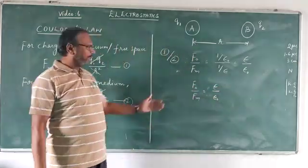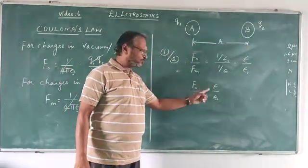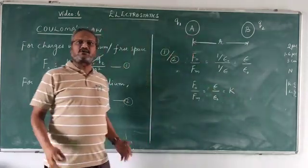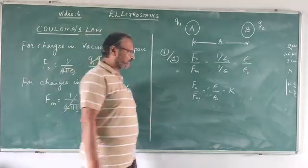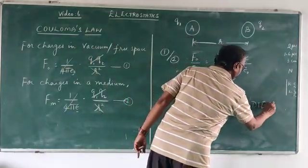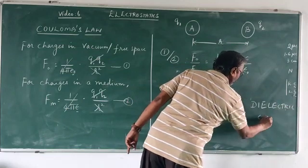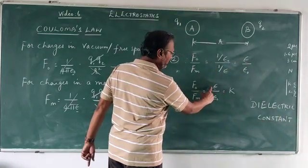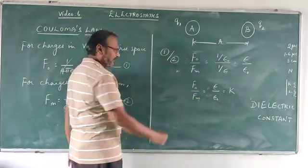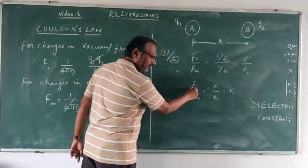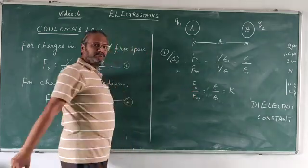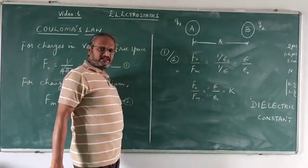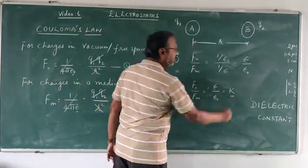This ratio of permittivity in a particular medium with respect to in air is called K. K is called dielectric constant. It depends on the nature of the substance. This dielectric constant can be written as the ratio of epsilon upon epsilon 0. It also can be written as the force in air or vacuum upon force in a medium. This two being the same, the ratio between similar quantities, we have no unit for dielectric constant.